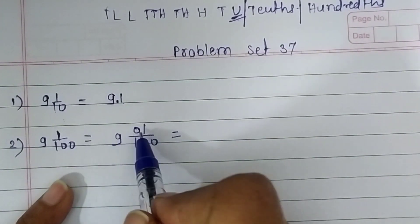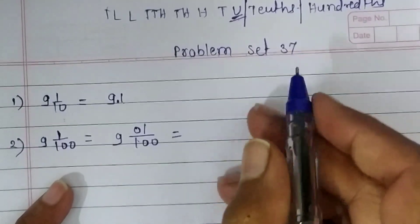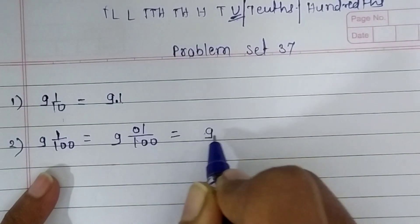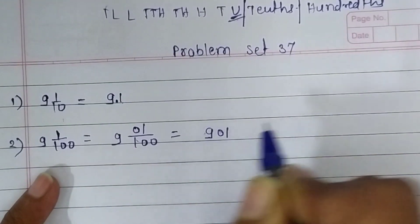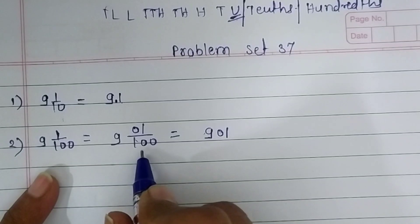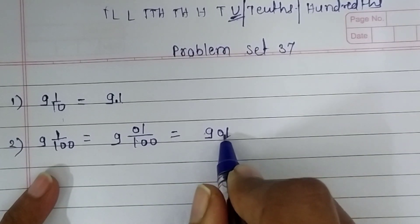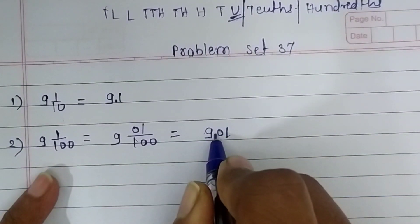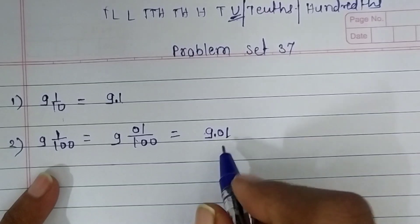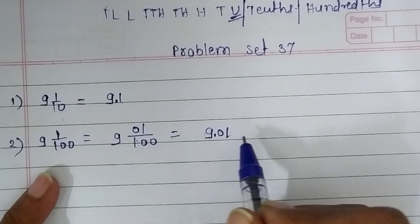When there are two zeros in the denominator, we left two places from our right side. Let's solve it: ignore the denominator. This is our whole number 9, and this is our numerator 01. The denominator has two zeros, so we move two places from our right side — one, two — and place a decimal point. Now the decimal fraction is 9.01.